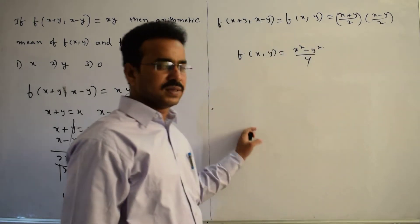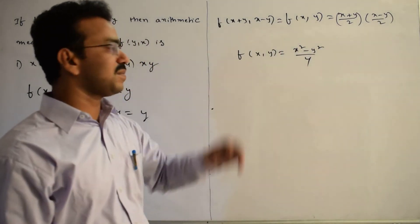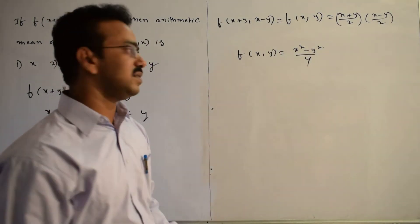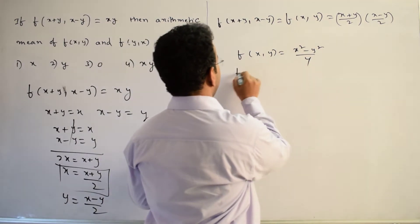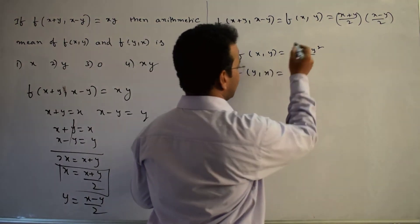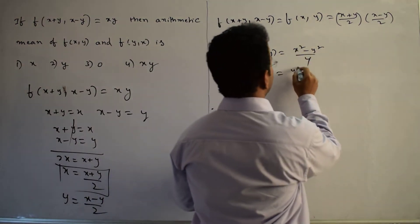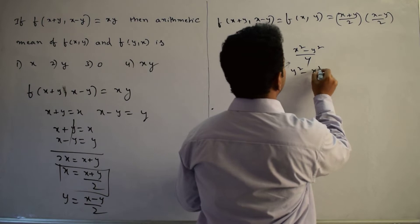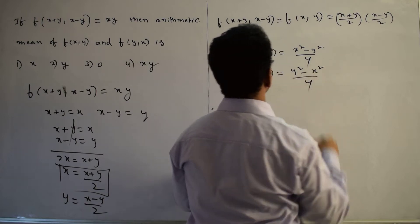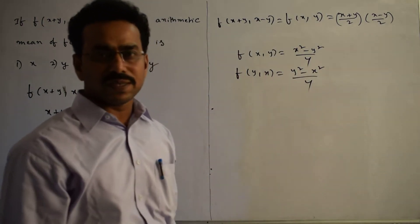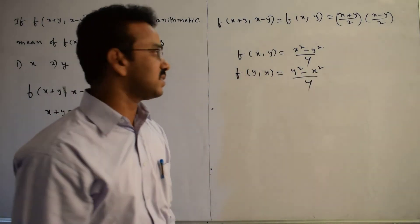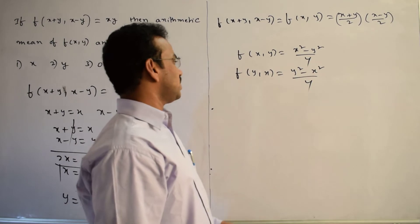So f(x,y) = (x²-y²)/4. And then f(y,x) — simply x is replaced by y and y is replaced by x — equals (y²-x²)/4.